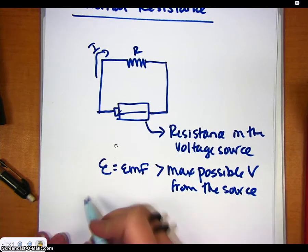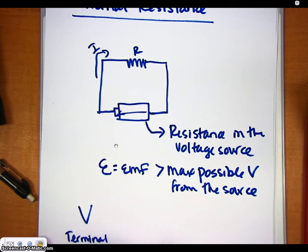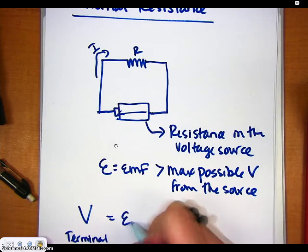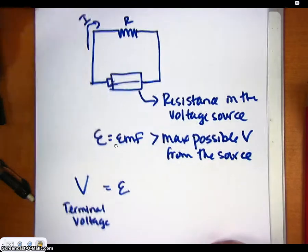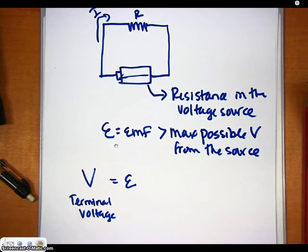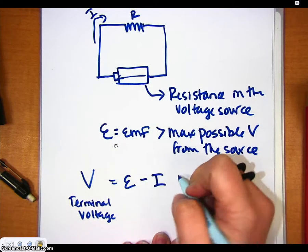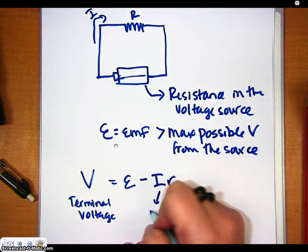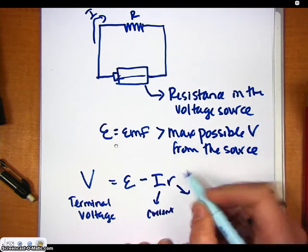The equation for figuring out what voltage actually gets out of the battery, which we call terminal voltage, is taking the total that the source has (so if it was a 12-volt or 9-volt battery) minus the current times the internal resistance. So V equals E minus I times r, where I is the current and r is the internal resistance.